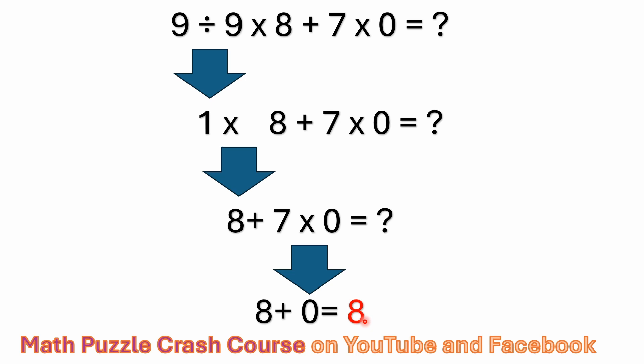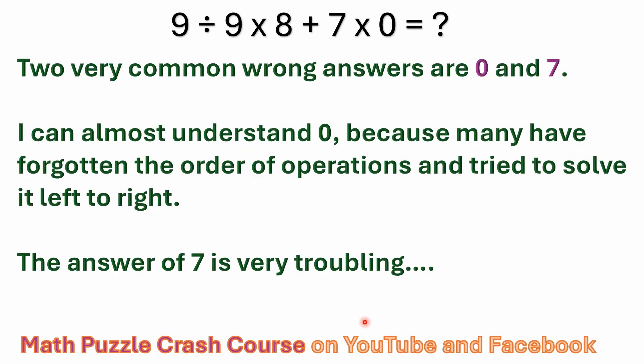Now I'm going to cover these wrong problems because I'll just say it now that the two very common wrong answers to this problem are zero and seven. Now the zero, I can sort of understand by people who forgot the total order of operations and they're just going left to right. They're just blindly going nine divided by nine is one. One times eight is eight. Eight plus seven is 15. 15 times zero is zero. I get where they're coming from. That's totally incorrect. You don't blindly solve left to right. You have to follow the order of operations. And we've talked about why, because you got multiplication is shorthand for repeated addition. So you've got to resolve that stuff before you add and subtract. That's how it's always been. So I can understand the zero because a lot of people just forgot the order of operations.